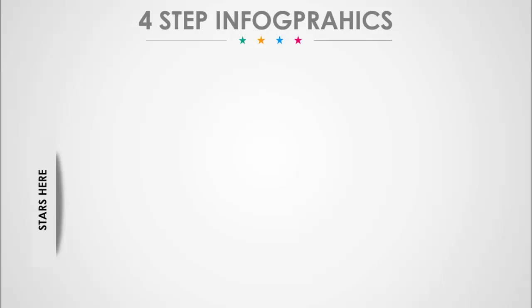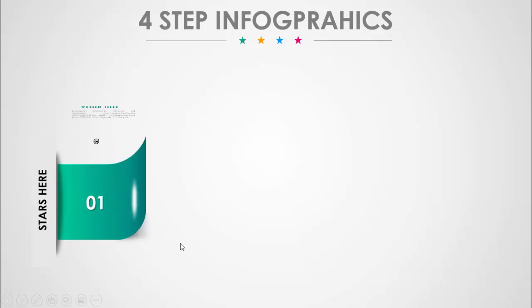In today's tutorial I'm going to show you how to create a four glossy steps infographic slide in PowerPoint. This is how the slide works — I've put a text called 'Starts Here' with a cutout effect, and when I click, the first option appears with an icon, title, and detailed text, along with a glossy effect and a shadow effect at the bottom.